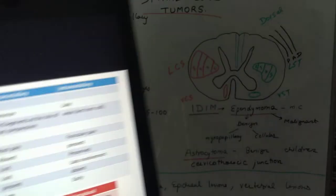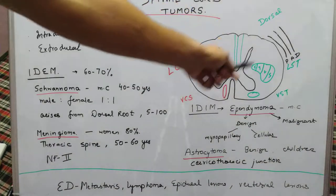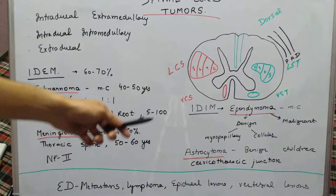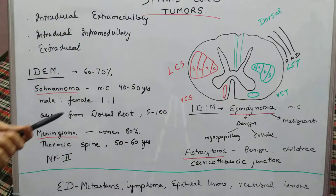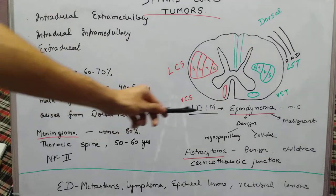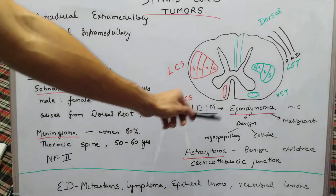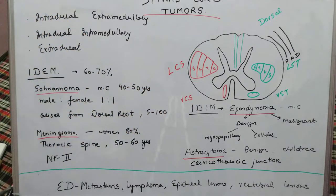In summary, the key things to remember are how the spinal tracts are placed and what they control, and a brief enumeration of the various tumor types.